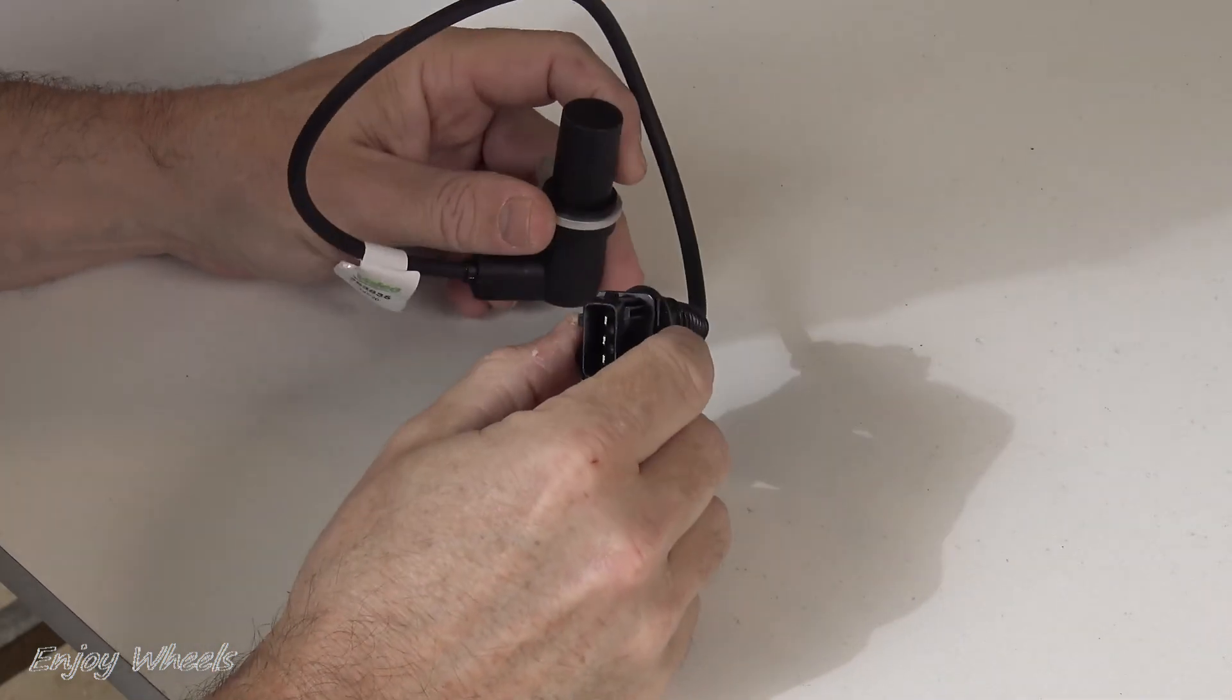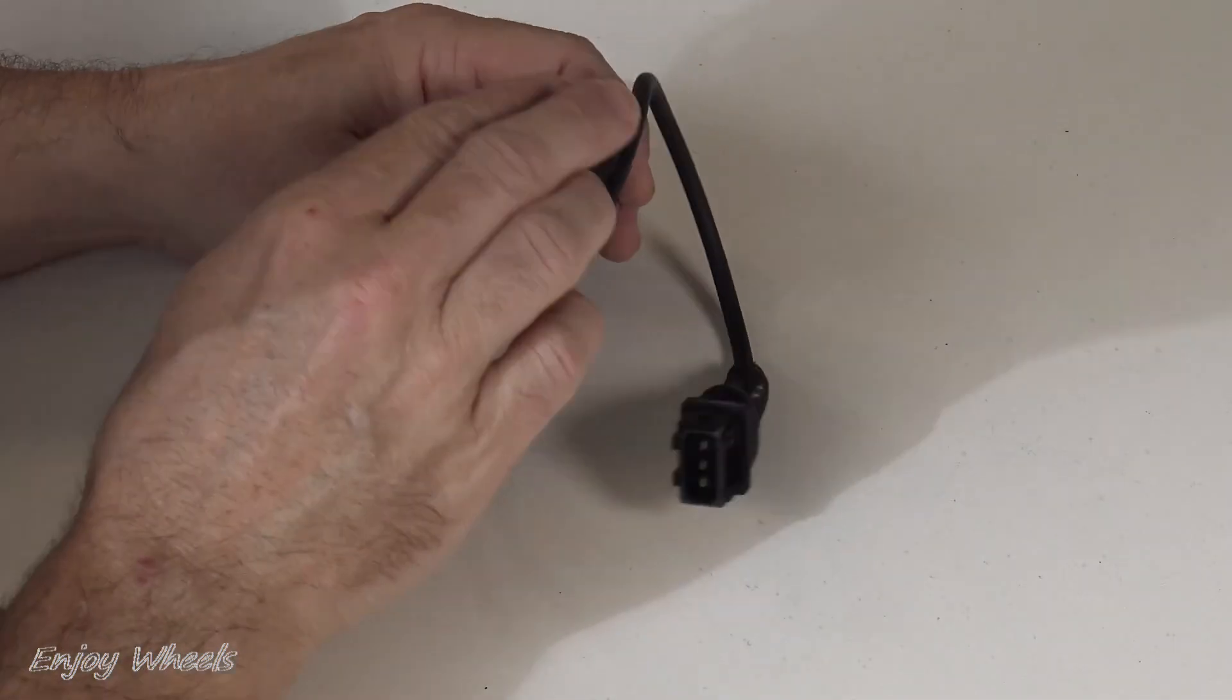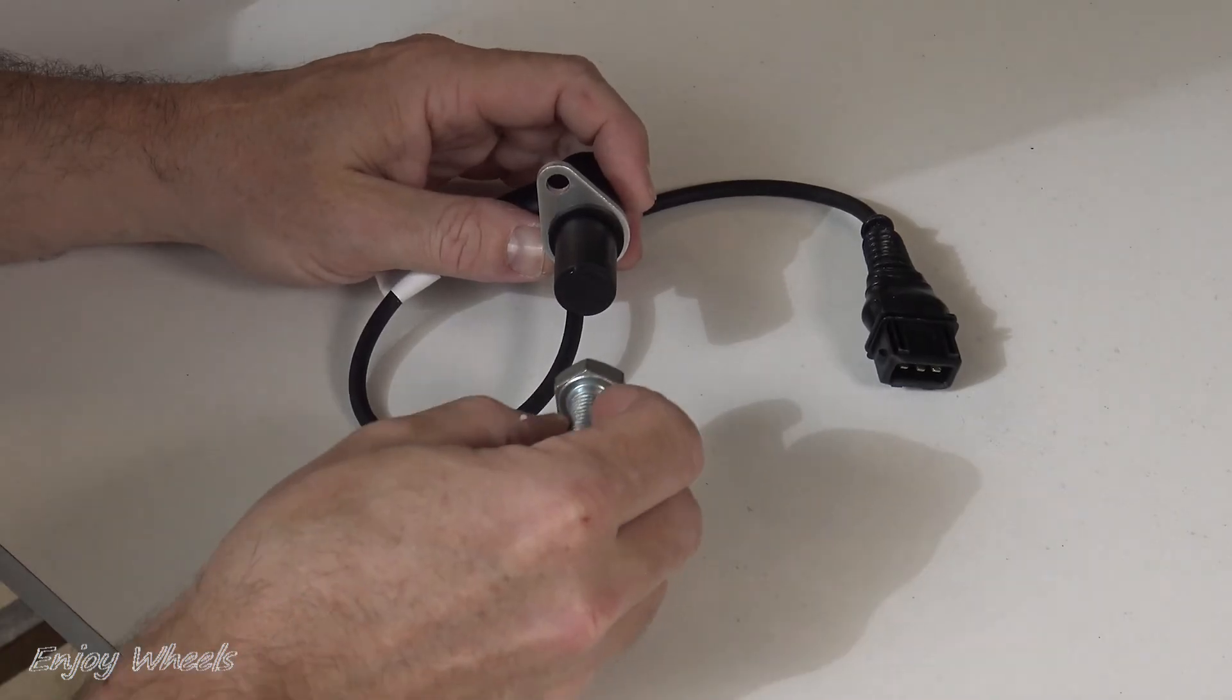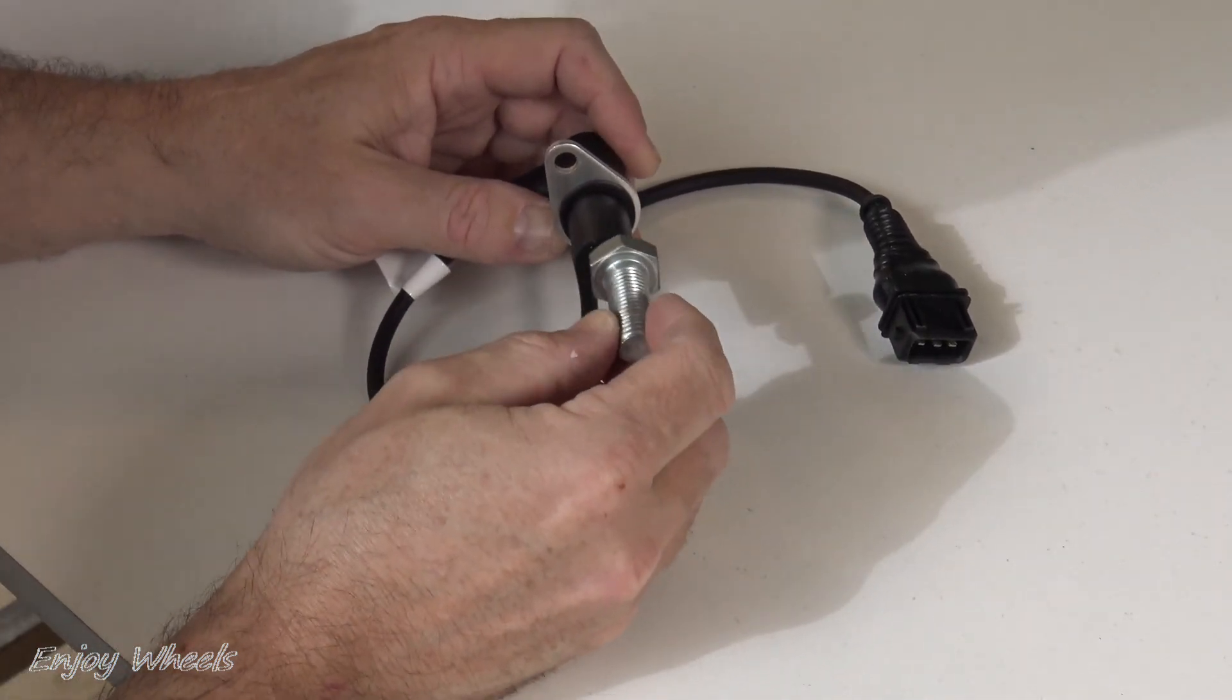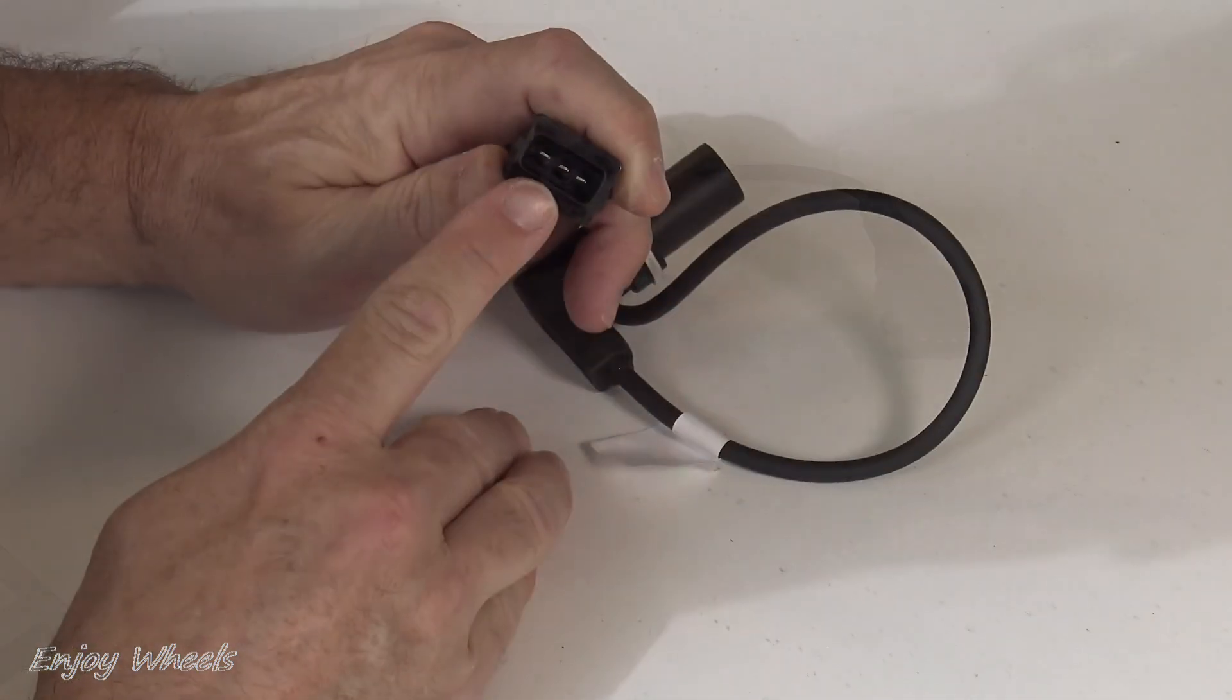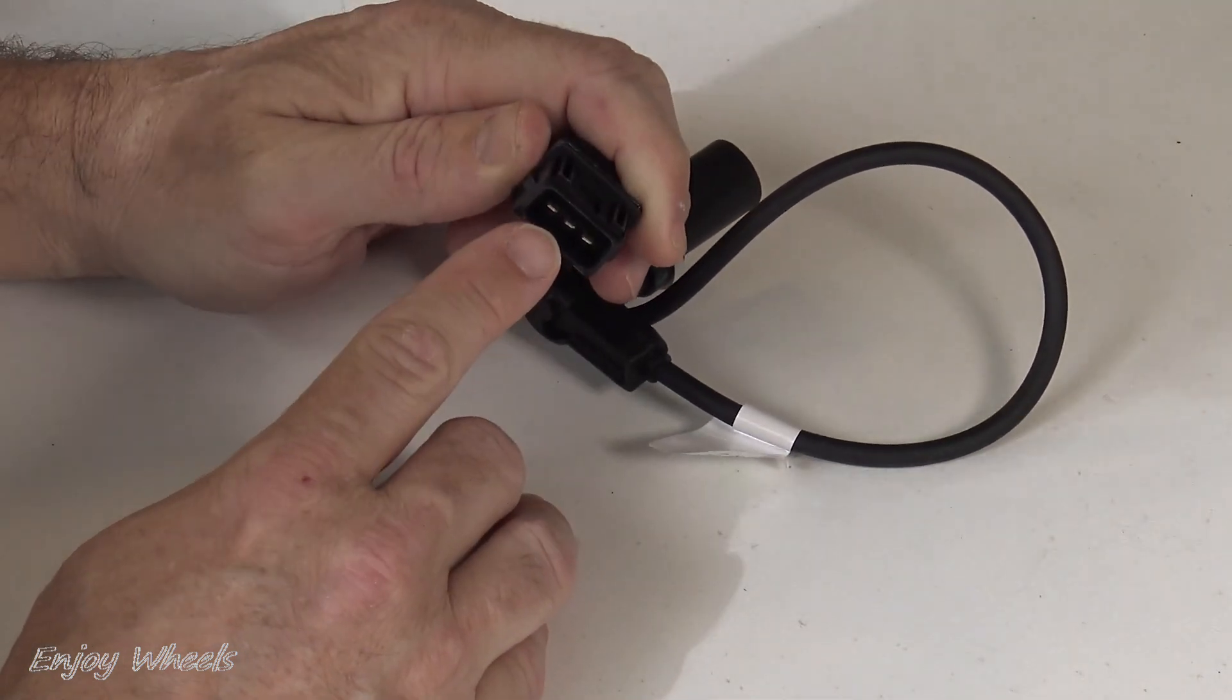We will then look at the last sensor, the BMW camshaft position sensor. And it works differently than the previous two. Already it is not magnetized. There is no magnet in there. Also, I assure you that the camshaft pulley is not magnetized either. And also there are three wires while it is not a Hall effect sensor. Come on, I solve the mystery. This sensor is an oscillating inductive sensor.